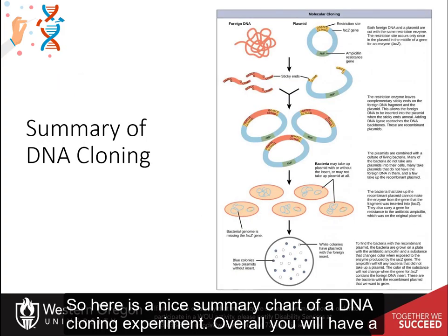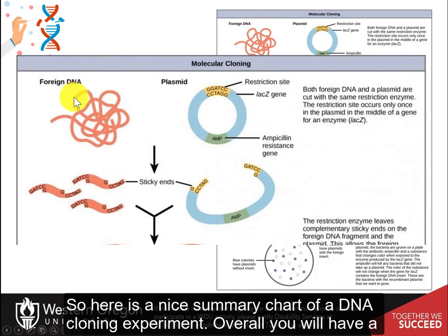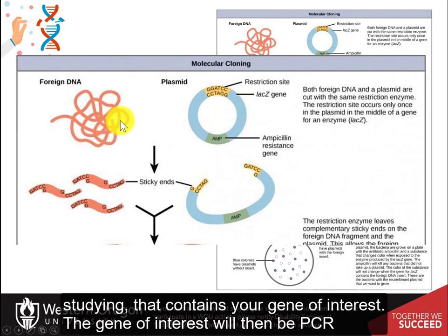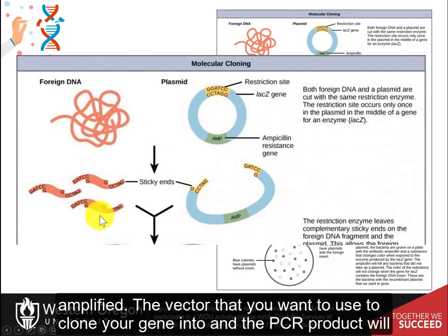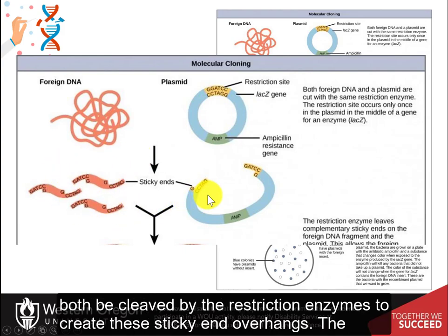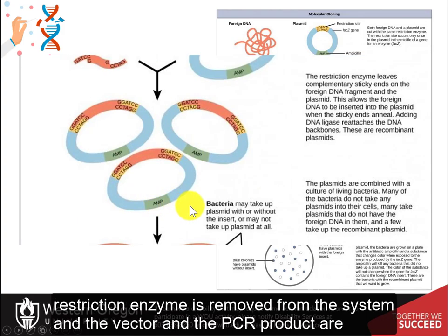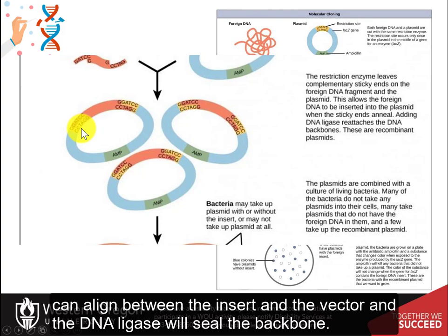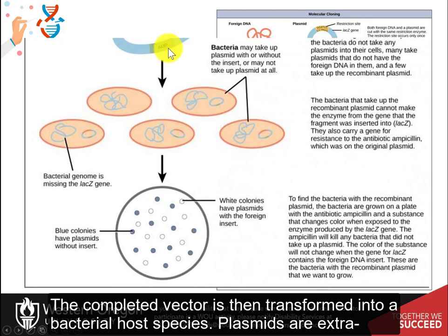Here is a nice summary chart of a DNA cloning experiment. Overall, you will have a template DNA — your genomic DNA from your system containing your gene of interest. The gene of interest will then be PCR amplified. The vector and the PCR product will both be cleaved by the restriction enzymes to create sticky end overhangs. The restriction enzyme is removed, and the vector and PCR product are brought together in the same tube. DNA ligase is also added so that the sticky ends can align between the insert and the vector and the ligase will seal the backbone. The completed vector is then transformed into a bacterial host species.